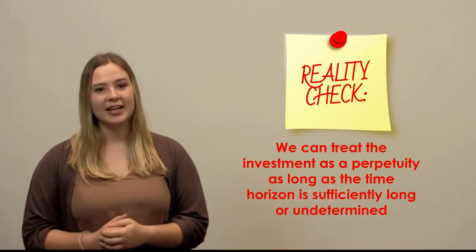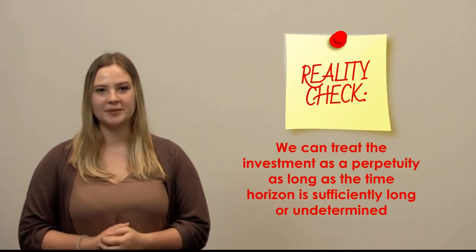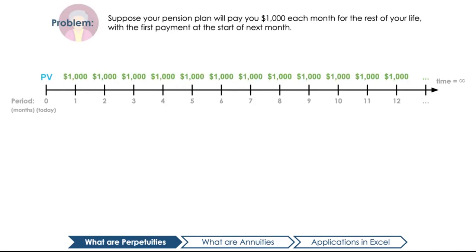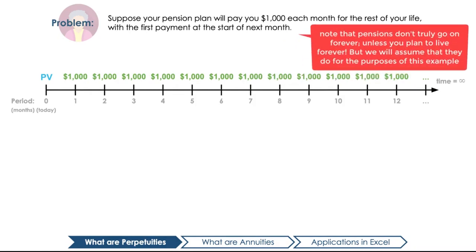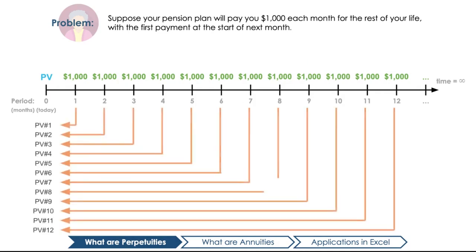Without a future date in mind, we can't calculate the future value of the investment, and so we only consider the present value of a perpetuity. Let's try an example. Suppose your pension plan will pay you $1,000 each month for the rest of your life, with the first payment arriving at the start of next period. The time value of money principle teaches us that if we receive the same fixed payment each period, that money is worth less and less each period in today's dollars. So to calculate the present value of the entire pension, we basically have to calculate the present value of every monthly payment individually, and then add all of them together.